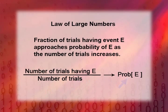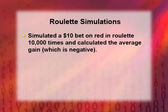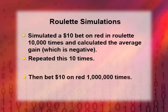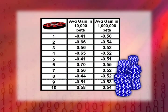In the case of roulette, this is exactly what casinos count on. We did some simulations to illustrate this. We simulated making a $10 bet on red in roulette 10,000 times, calculated the average gain — which was actually a loss — and repeated the whole simulation 10 times. Then we did the same thing betting $10 on red a million times, repeated 10 times. Computers are great at this — perfectly happy simulating a million roulette bets.